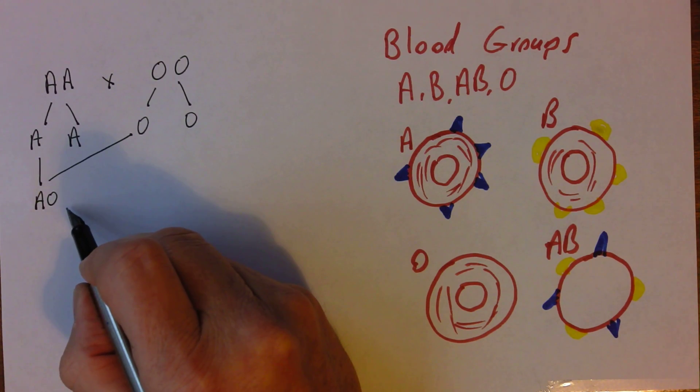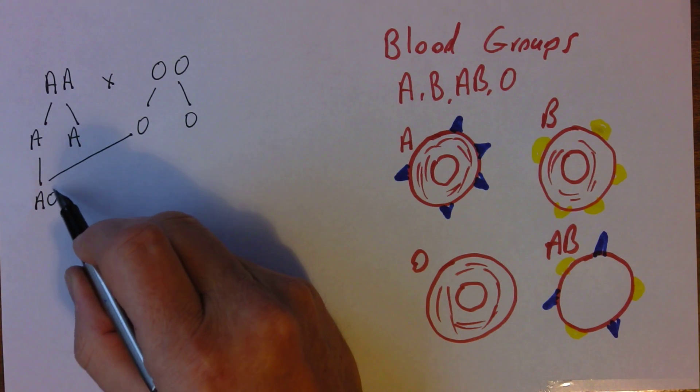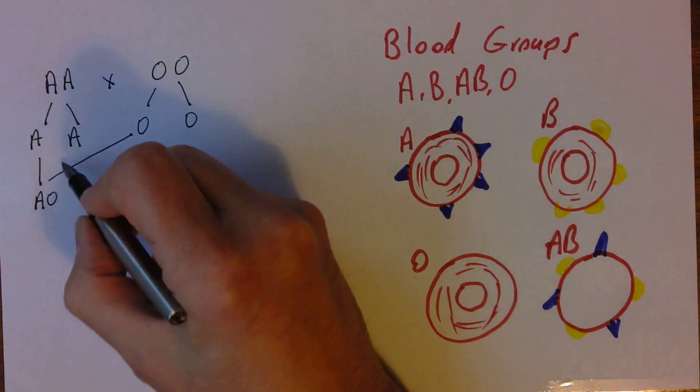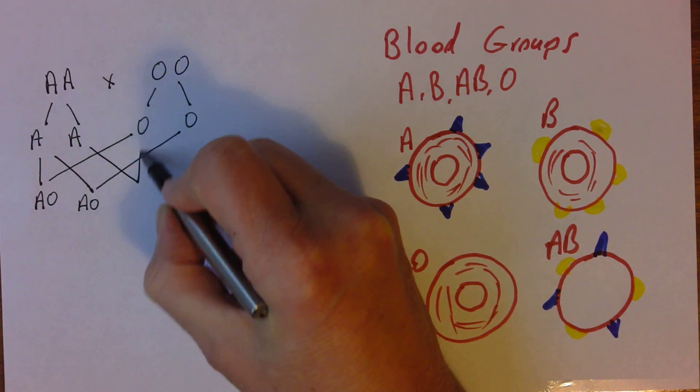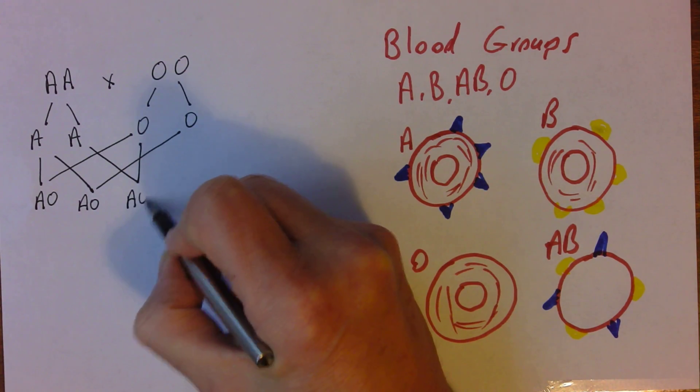Now because the A allele codes for the A antigen, the A is dominant. So AO, that person phenotypically will be blood group A. And it's going to be the same for that one. I think you can see it's actually going to be the same for all of these.